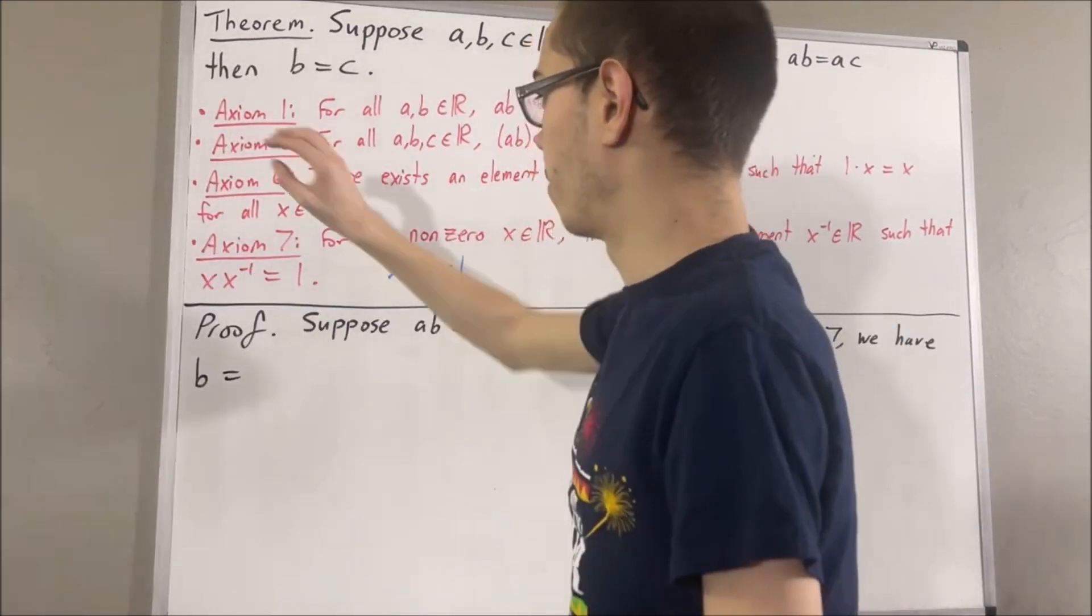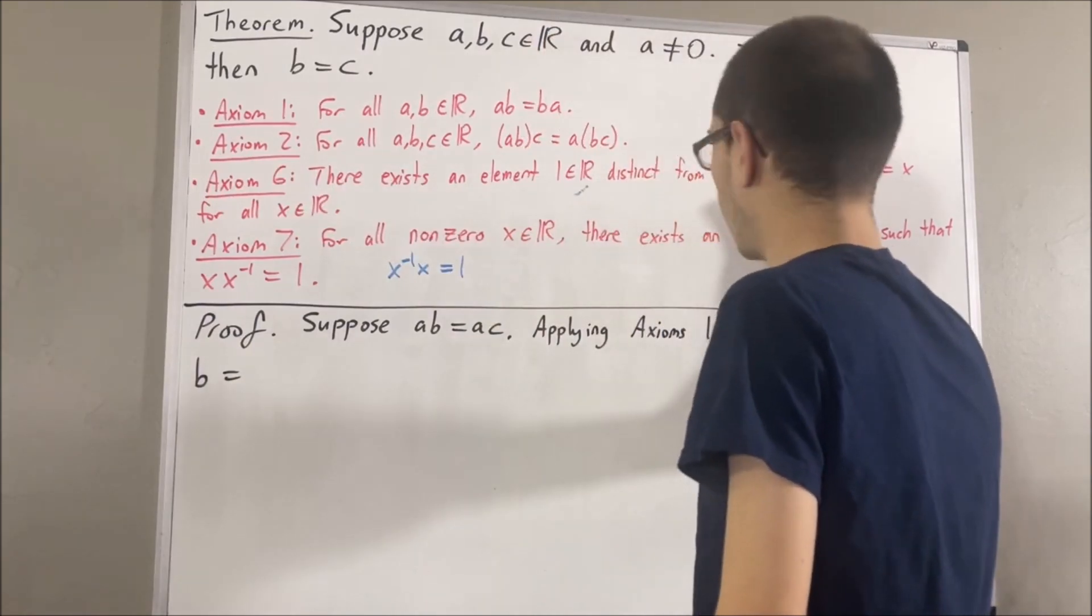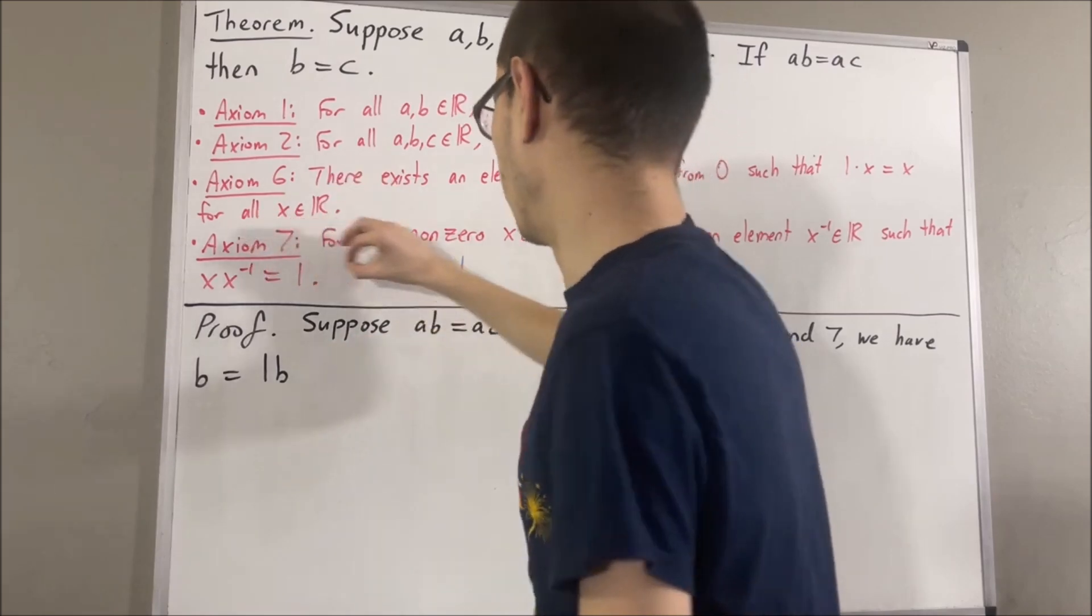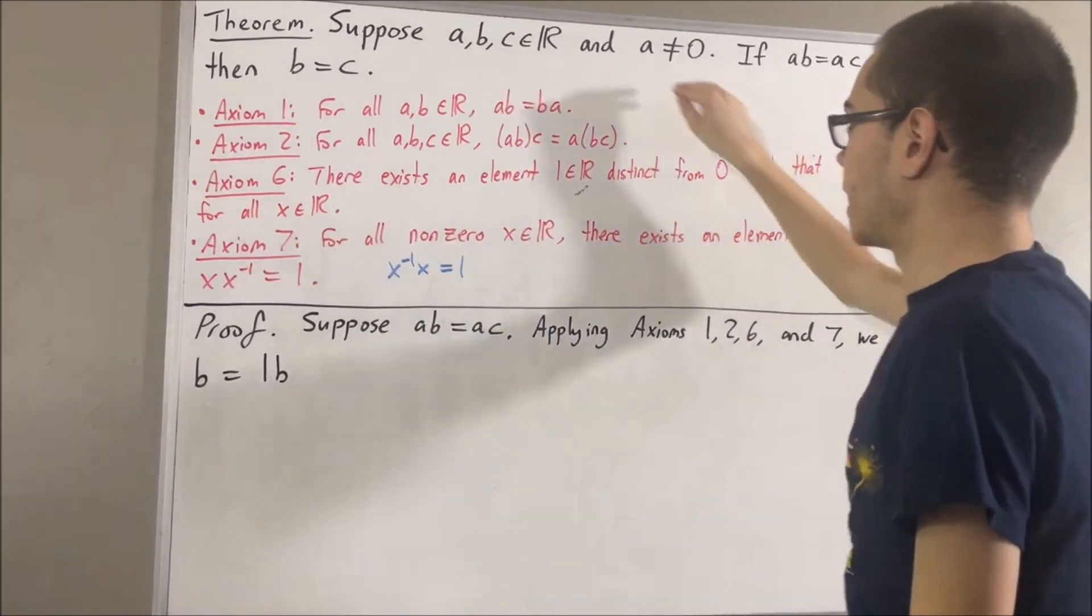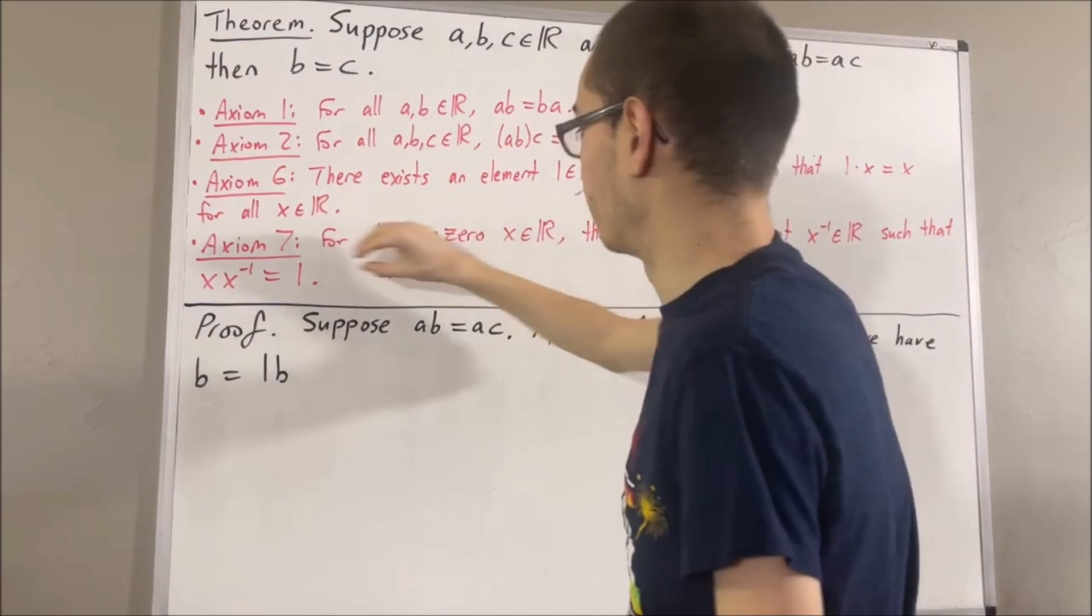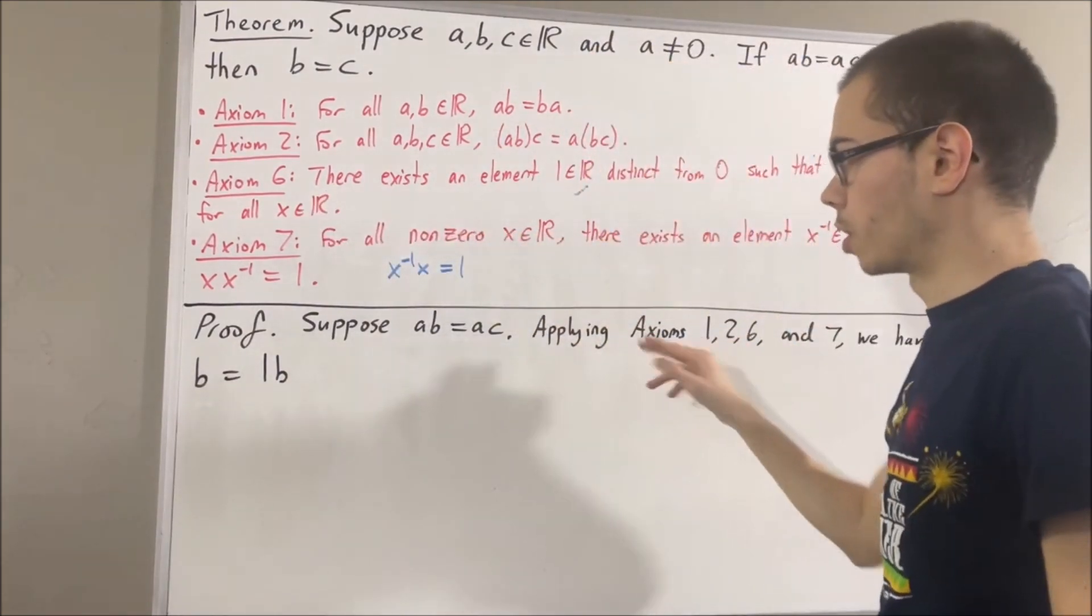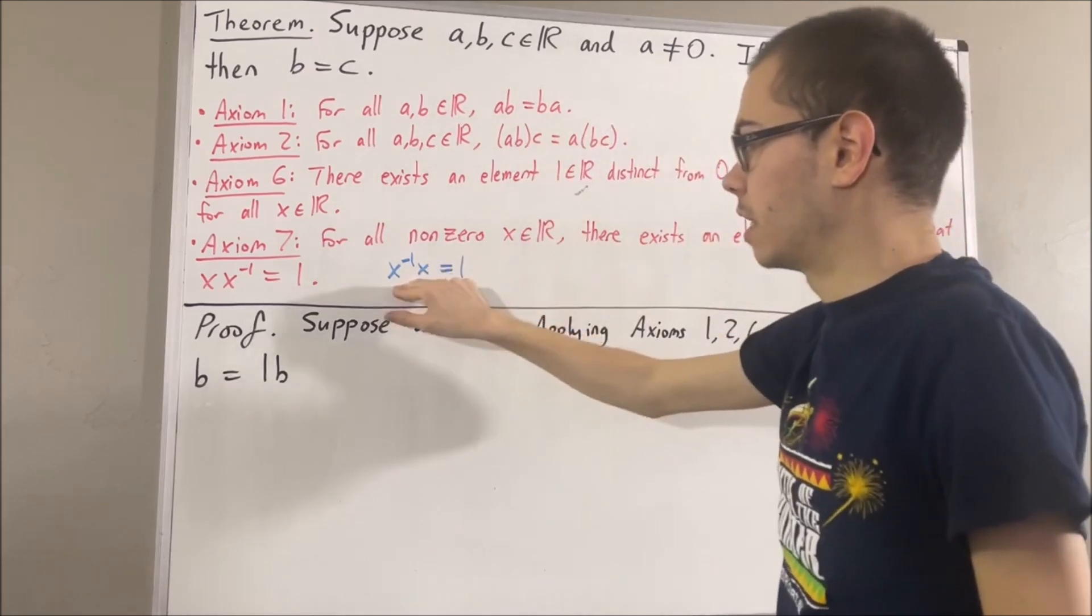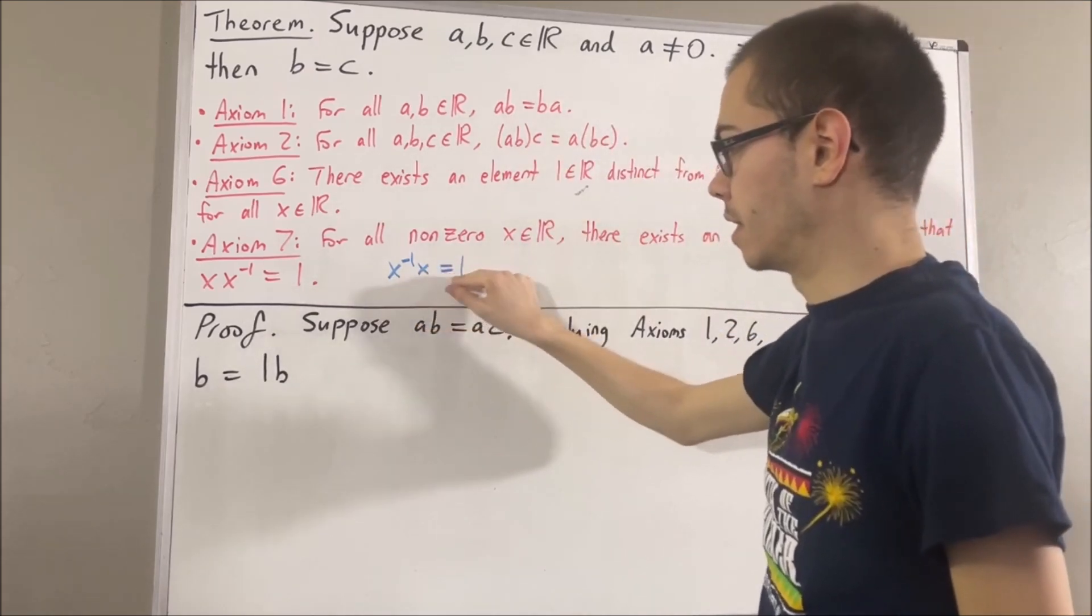So, first of all, by axiom 6, we have B is equal to 1 times B. But then, we apply axiom 7. Since A is non-zero, we can apply axiom 7 to A. So, taking x to be A, we have that the reciprocal of A times A is equal to 1.